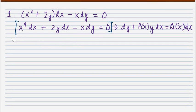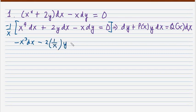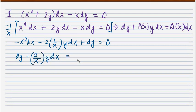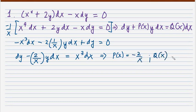I will multiply by negative 1 over x to remove x from the dy term. I arrive at negative x cubed dx minus 2 times (1/x) y dx plus dy equals 0. Rearranging: dy minus (2/x)y dx equals x cubed dx. So P(x) equals negative 2 over x, and Q(x) equals x cubed. It now fits the standard form.